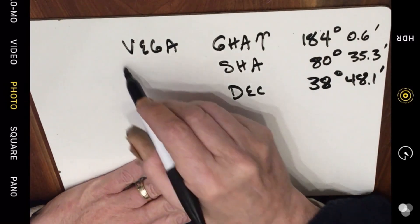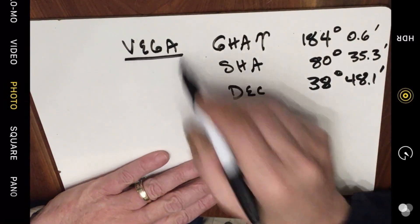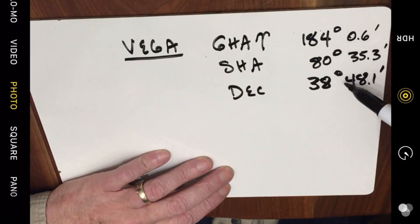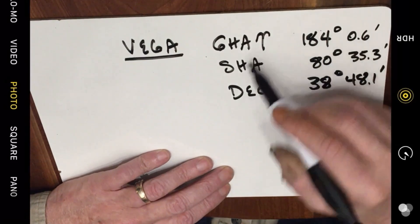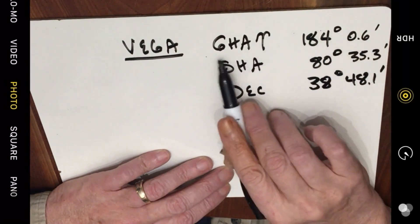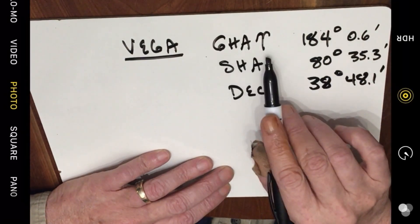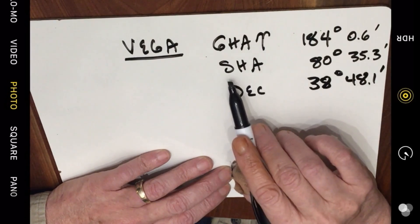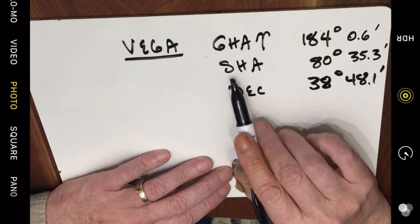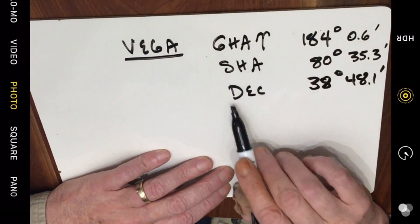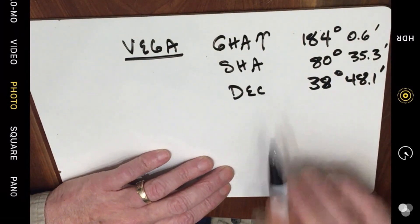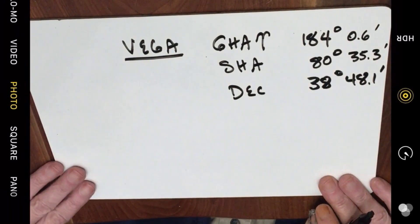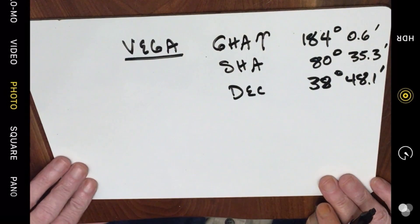Today we're going to look at the star Vega, and we have three values here that are essential to find the geographic position of the star. The first one is called the Greenwich Hour Angle to Aries. The second is called the Sidereal Hour Angle, and the last is called the Declination. There was a little bit of confusion about this, so let's see if we can make this a little clearer.